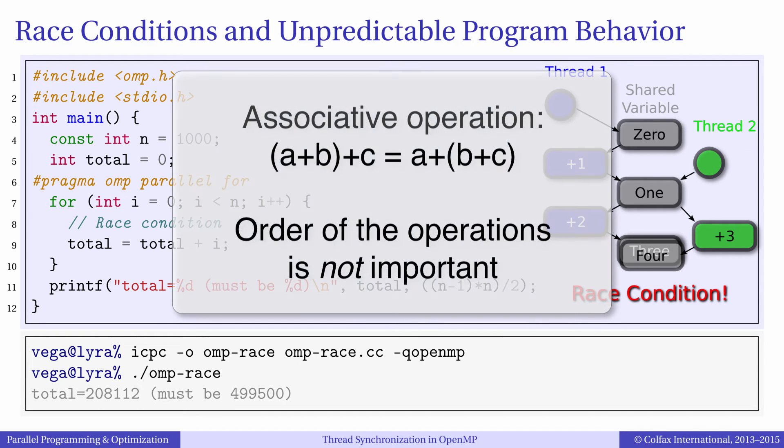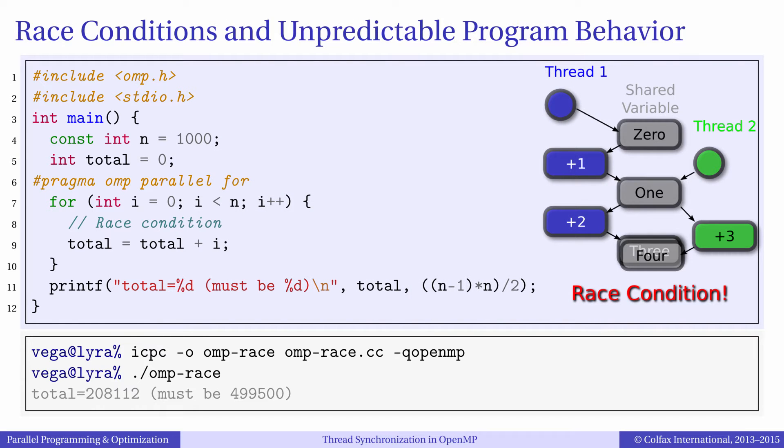This is an associative operation which we apply to a shared variable in a parallel loop. Such operations are typical in high-performance computing applications and there is an effective way to express this operation in OpenMP code.